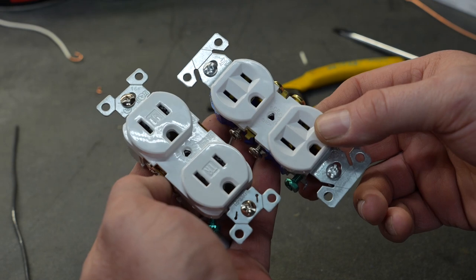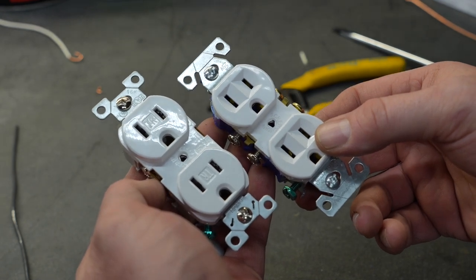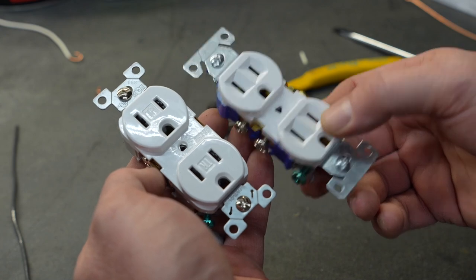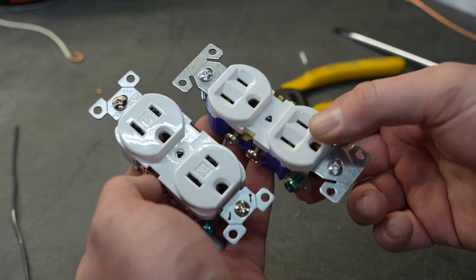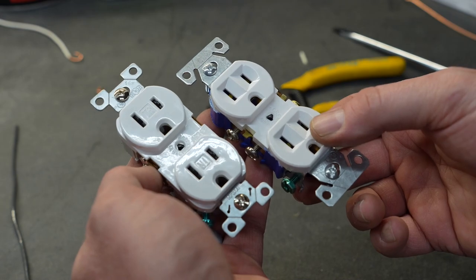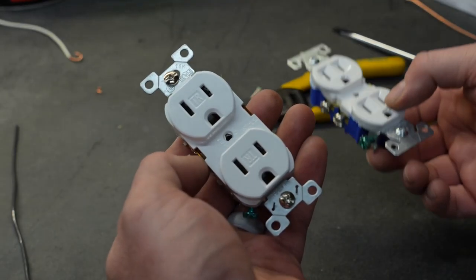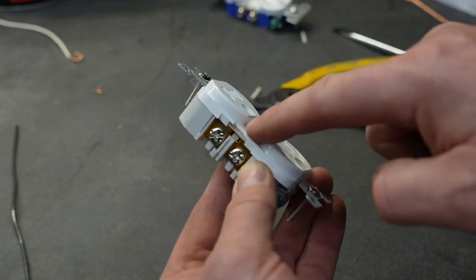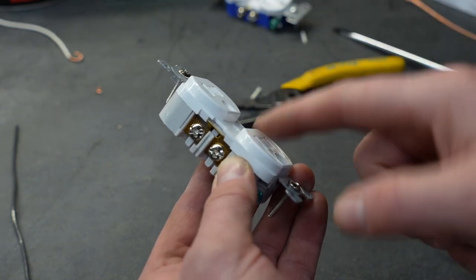And that brings me to a couple final conclusions and comments. Not all outlets are created equally. Both of these are Eaton outlets, but the one on the right is your typical 75 cent outlet that you can find in the big box stores. The one on the left is considered a spec or commercial grade outlet. These are built a lot better than the cheap ones that you can buy for 75 cents.